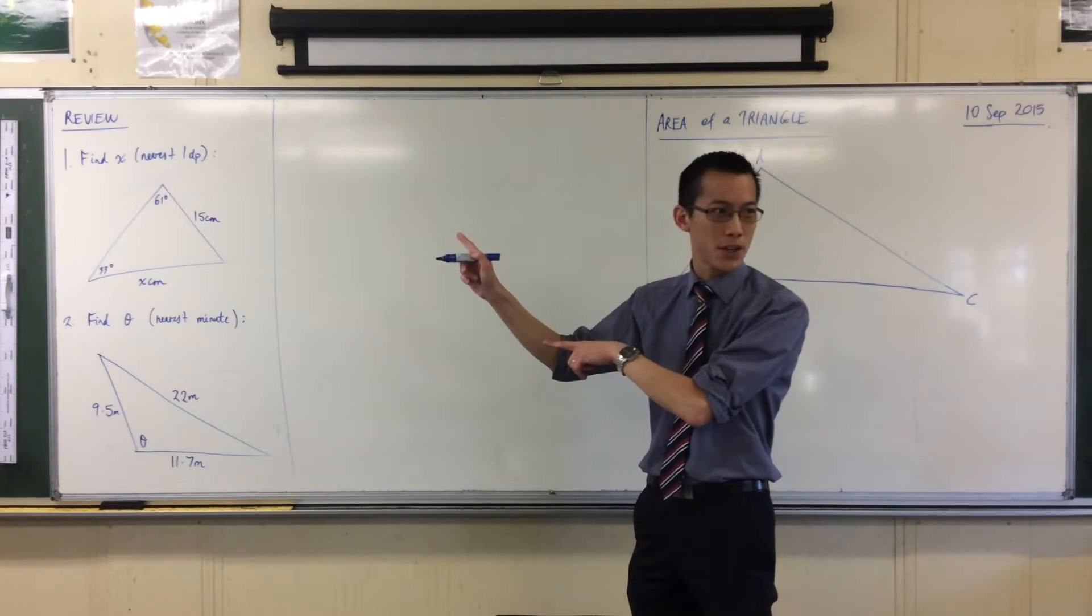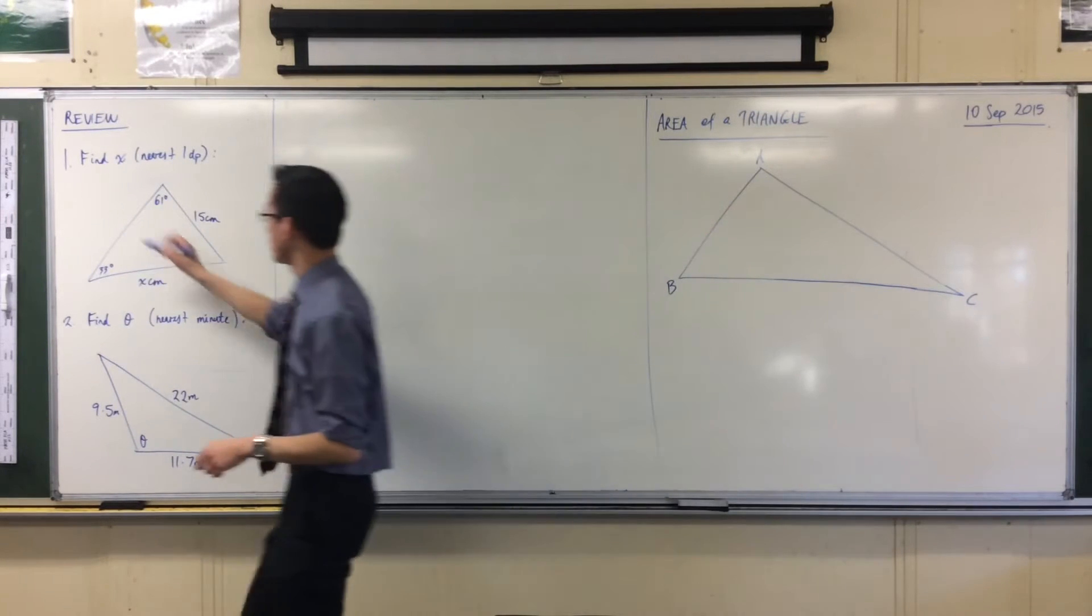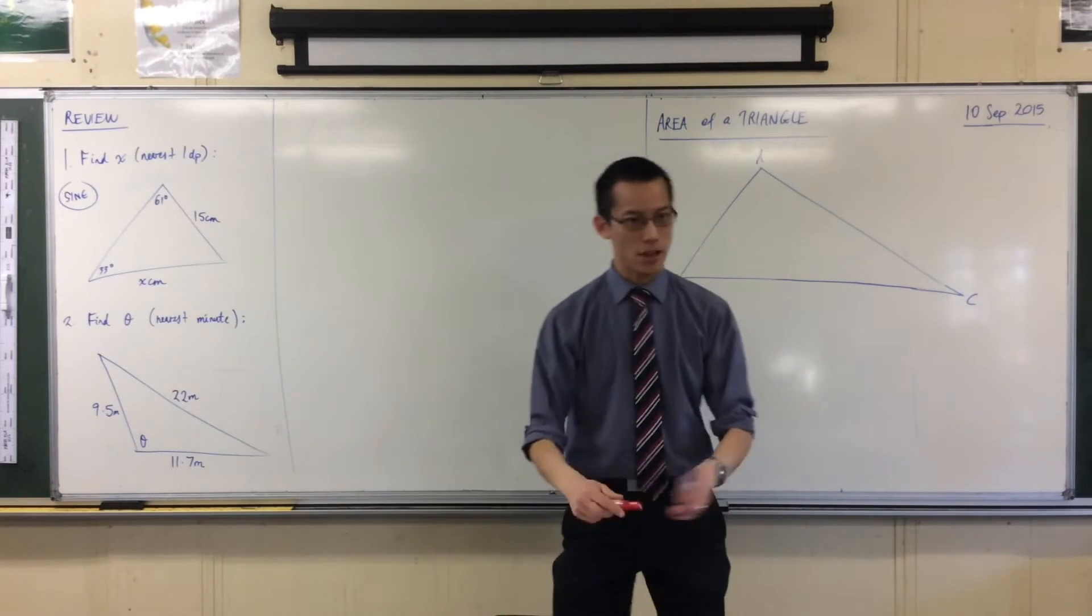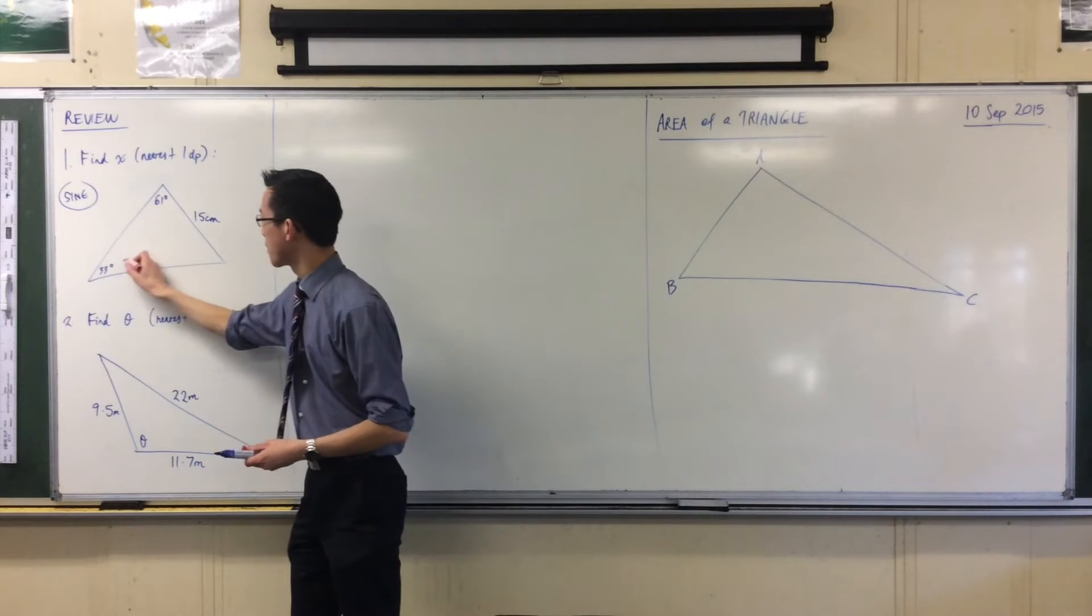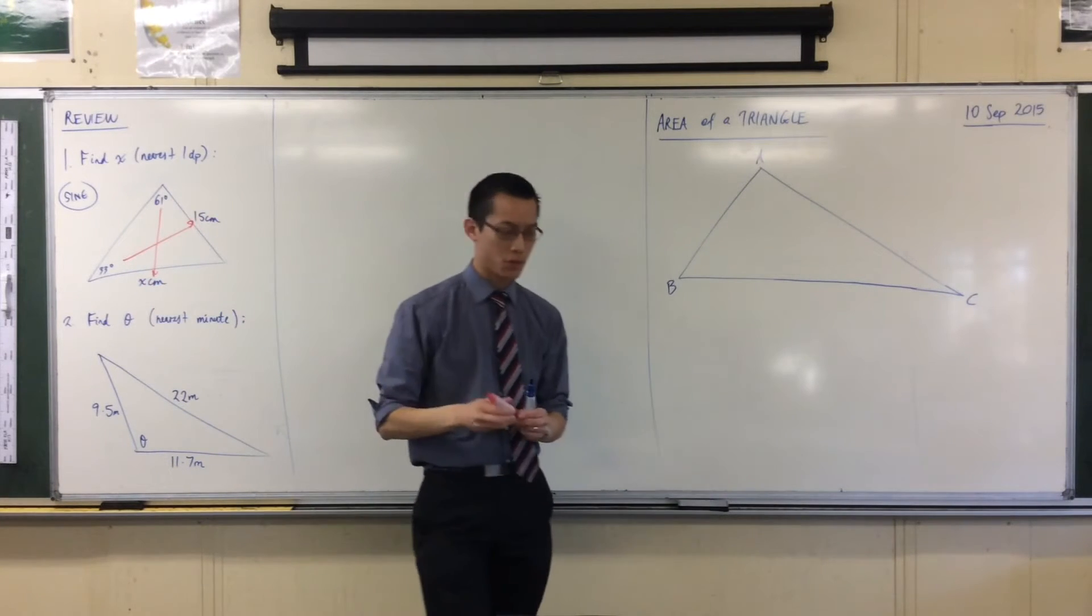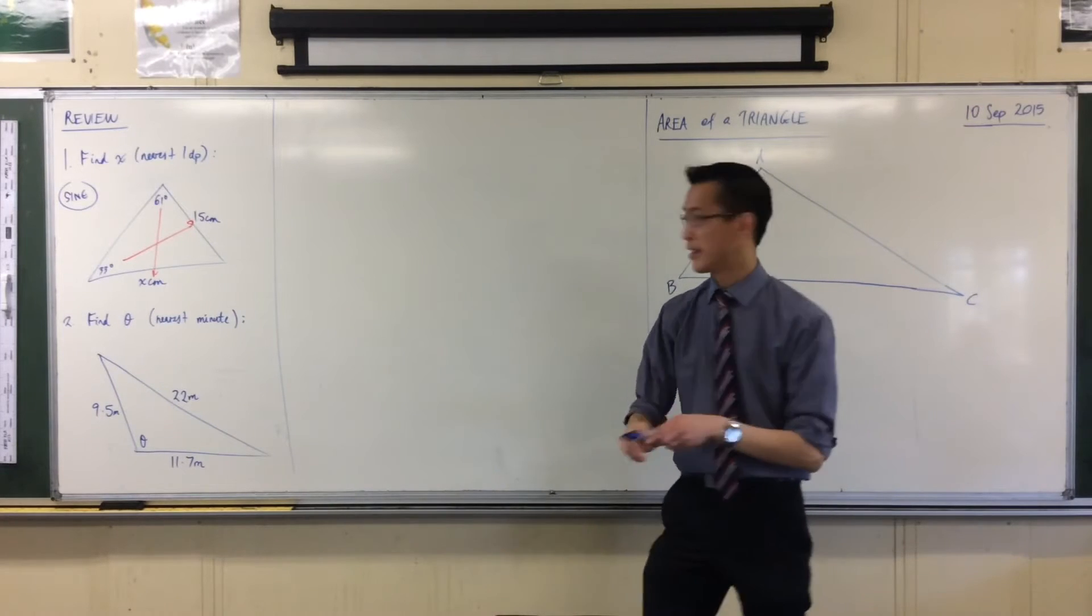So what technique are you going to use for the first one? Sine rule, very good. We're using the sine rule because you can see the information that you've got pairs up an angle with a side and an angle with a side, right? So you have two angles, one side, and that's the leftover.